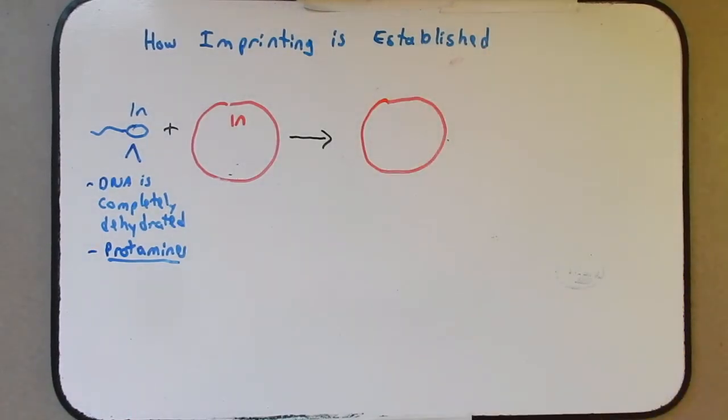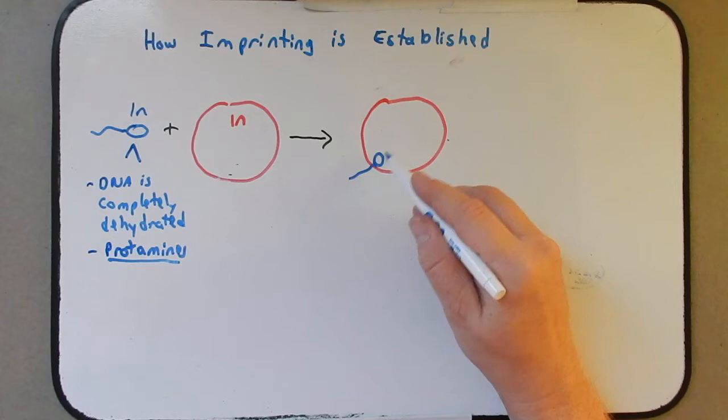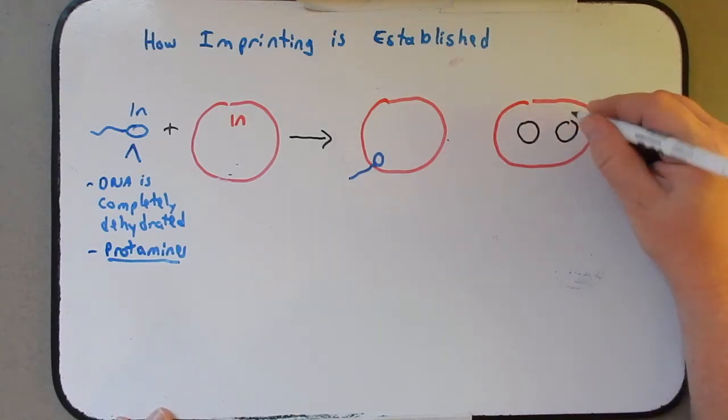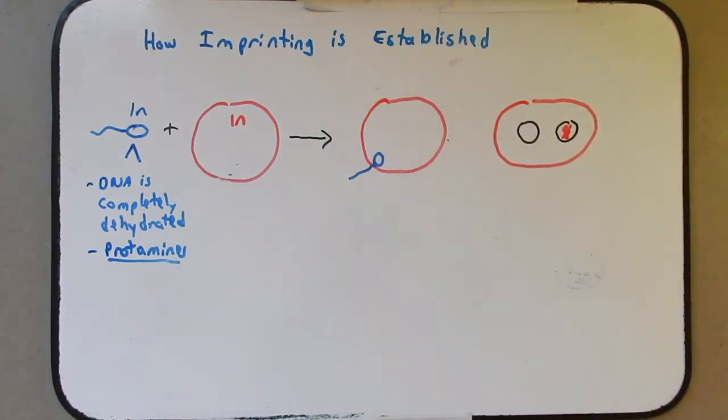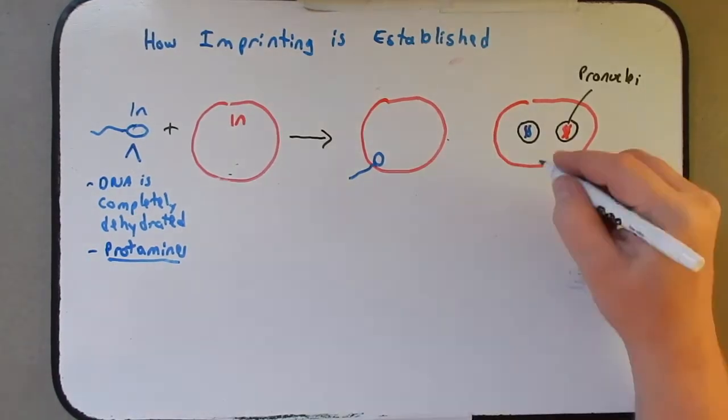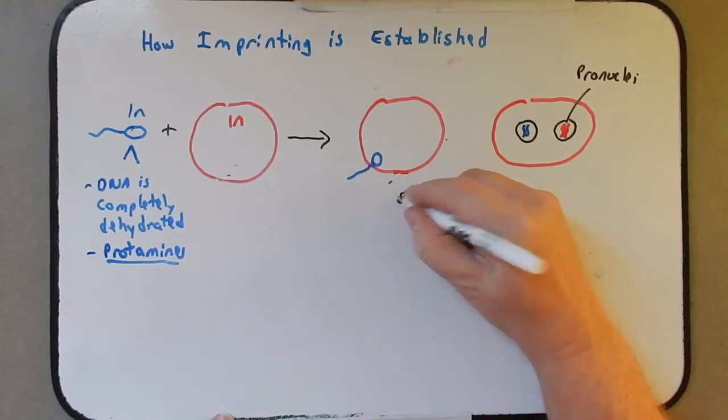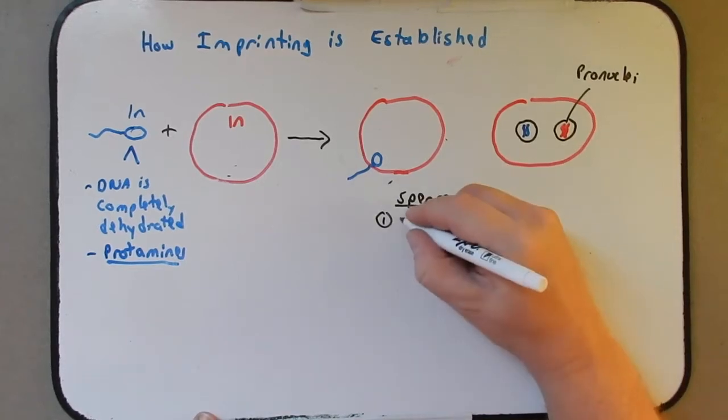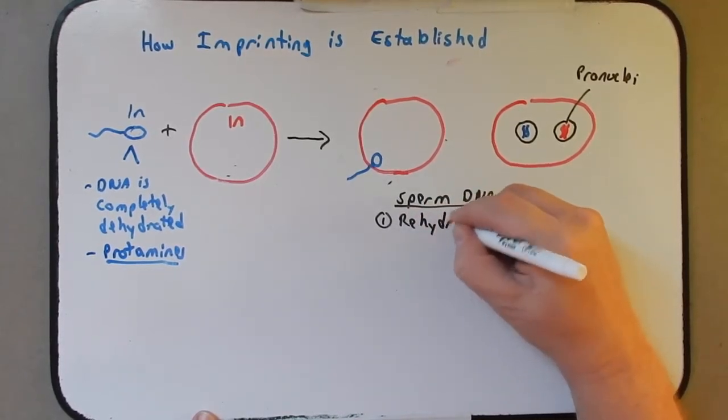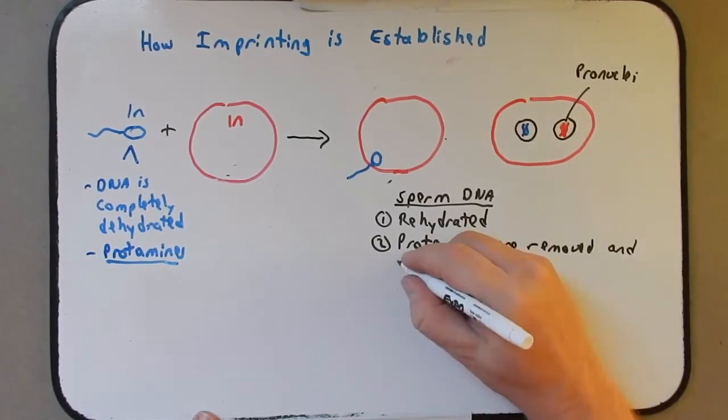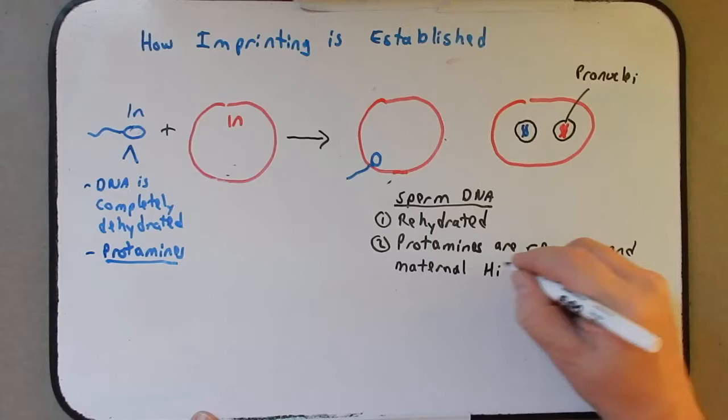So upon fertilization, as the DNA from the sperm is delivered to the oocyte, shortly after that, the paternal DNA and the maternal DNA exist in these pronuclei. They don't intermix yet. They will, but they don't do that yet. And a few things happen in this pronuclei with the sperm DNA. First, it's rehydrated.